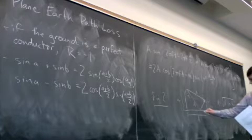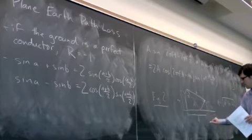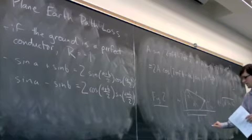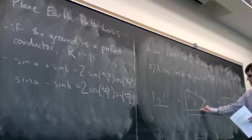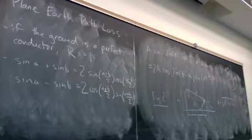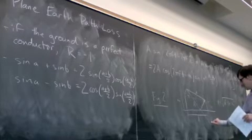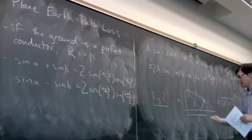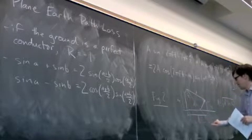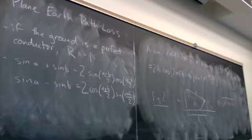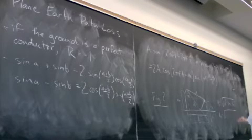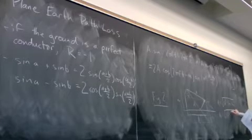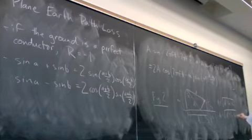So it turns out if I extend this down there, remember it's a reflection. This will be the same length as that. So now I have a right triangle. What's the run? Run d. What's the height? hₜ plus hᵣ. So d₂ is equal to root of d² plus (hₜ plus hᵣ)².